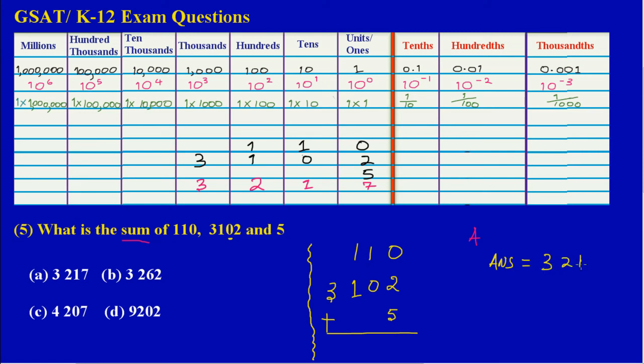So here, the appropriate answer would be A, 3217. So B would be incorrect, D would be incorrect, and also C would be incorrect.